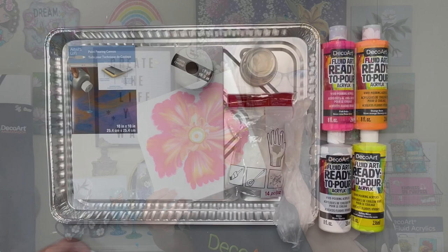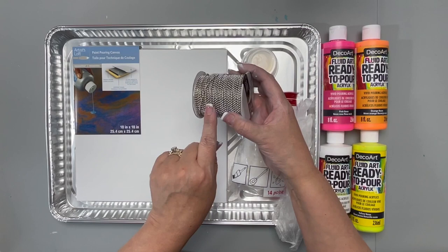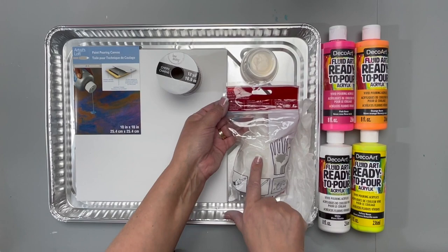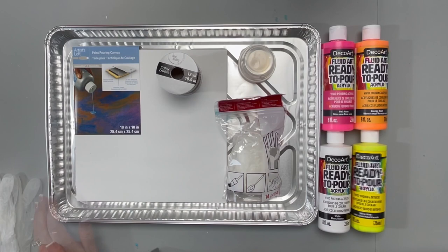You want a disposable tray just in case any paint flows over our surface. I'm using an Artist Loft paint pouring canvas. I picked up some chain in the jewelry section at Michaels. I also picked up some Craftsmart multi-purpose vinyl gloves. Put those on to keep our fingers clean. I have four little plastic containers that I'll use to prop the canvas up when I base coat it white.